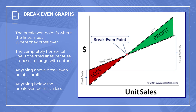Where the lines cross over is our breakeven point. Essentially, we should have two lines. One line is our total costs, which should increase over time. With unit sales across the bottom, as our sales and units go up, our total costs should also go up, because total costs include our variable costs as well. So if we make 10,000 units the costs will be lower, but at 100,000 units the costs will be much higher — that's why our total costs line goes up on a gradient.